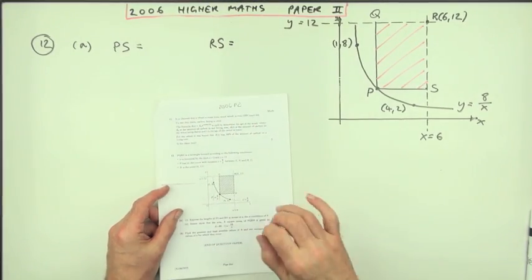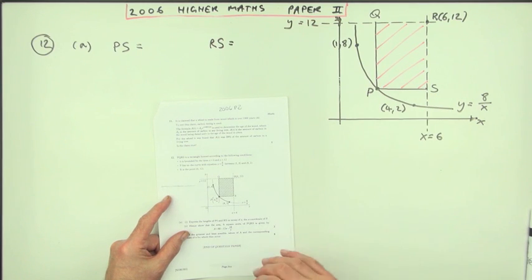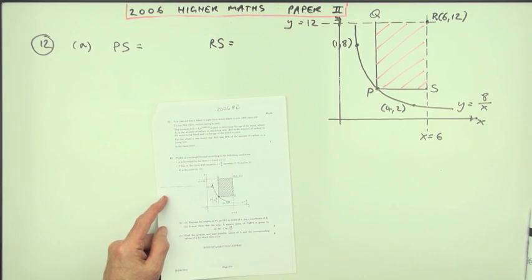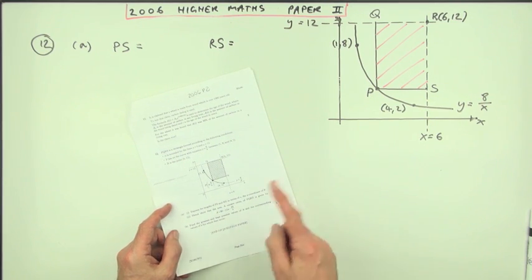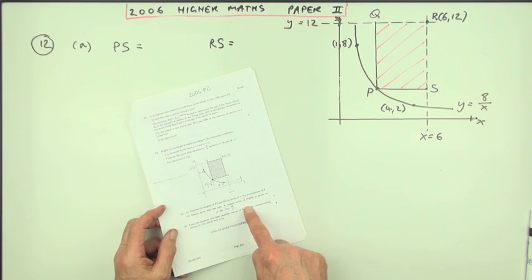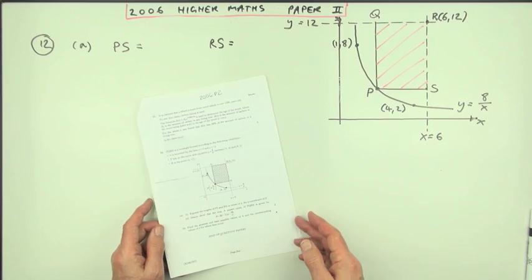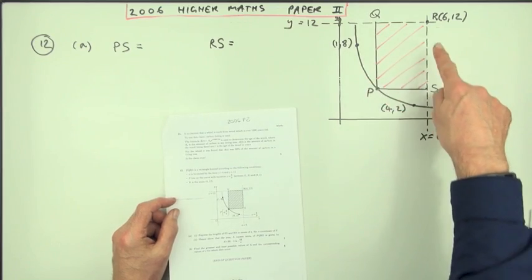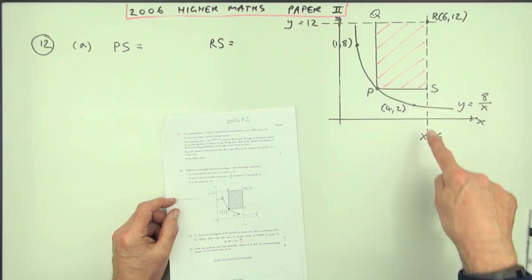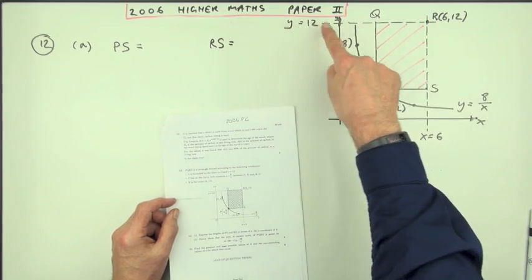Number 12 from the 2006 Higher Maths Paper 2, an optimization question with two usual parts. Part A: arrive at this equation here. Part B: use this equation to find maximums and minimums. First of all, what have we got here? There's some rectangle formed by bounding its edges—its top edge by the line y equals 12.